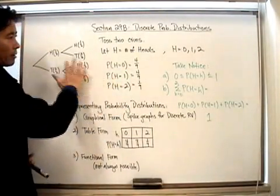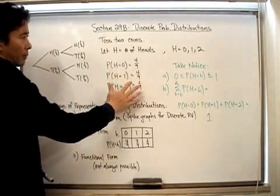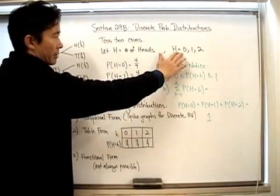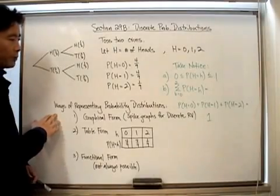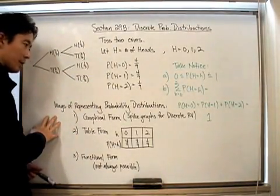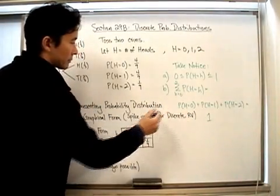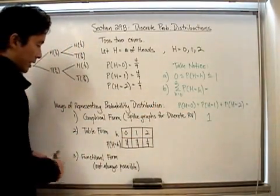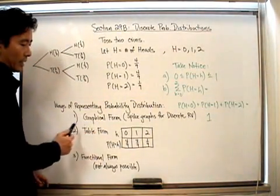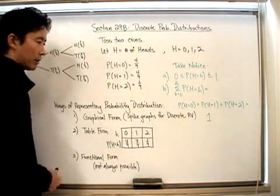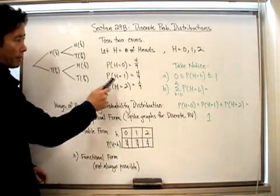Now, being that we are able to look at all the different probabilities associated with this discrete random variable, we can now talk about ways to represent the probability distribution. The first way that we know is a graphical form, and we did this yesterday, and we showed you what the spike graph will look like for this particular discrete probability distribution.